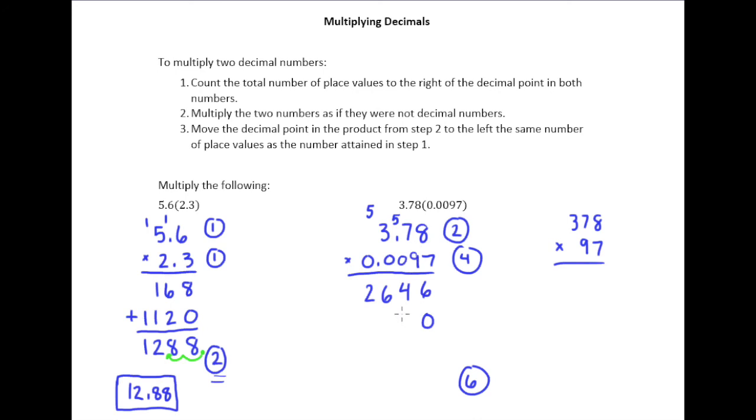Have that 0 there. 9 times 8 is 72, so put a 2 there, and then I should probably erase these 5s I carried so I don't get confused. So 72, put a 7 here. 9 times 7 is 63, plus 7 is 70. And then 9 times 3 is 27, plus 7 is 34.